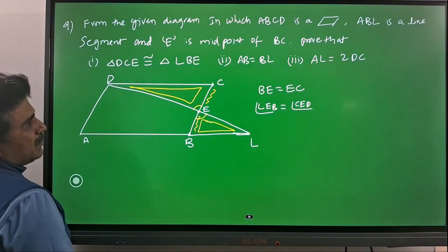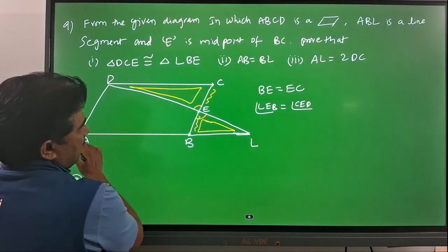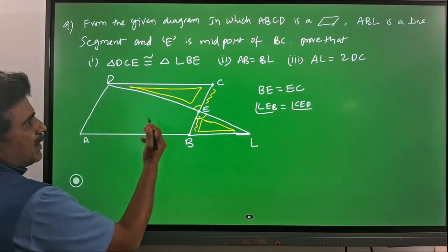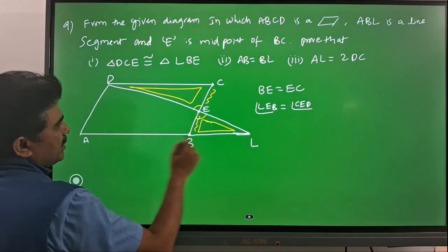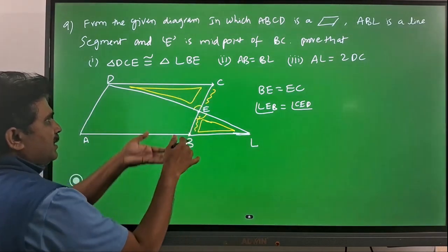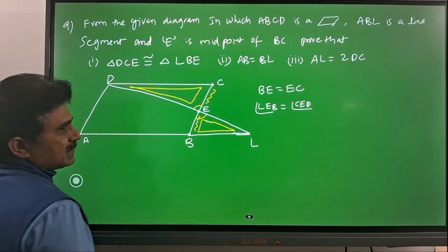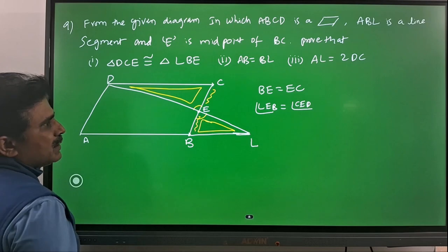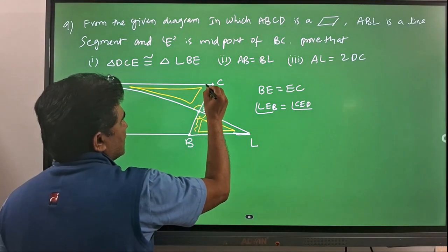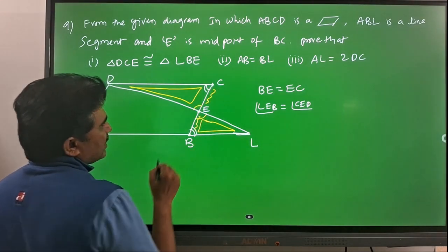And then one more, because DC and ABL are parallel since it is a parallelogram. DC and ABL are both parallel to this line. When those two are parallel, BC works as a transverse line which cuts these parallel lines. Then your angles at C and at B will become equal.